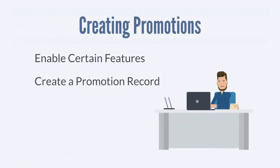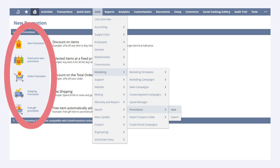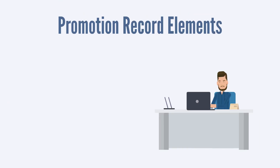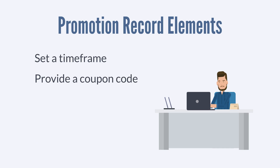Once you have enabled the features you need, you are ready to create a new promotion record. Navigate to Lists, Marketing, Promotions, New. On this page, you will need to select the type of promotion. The type of promotion you choose will affect the options available to you on the promotion record, but all promotion types share some key elements. Some of those shared elements include the ability to set a time frame for the promotion, to provide a coupon code for the promotion, and to target specific customers with the promotion.